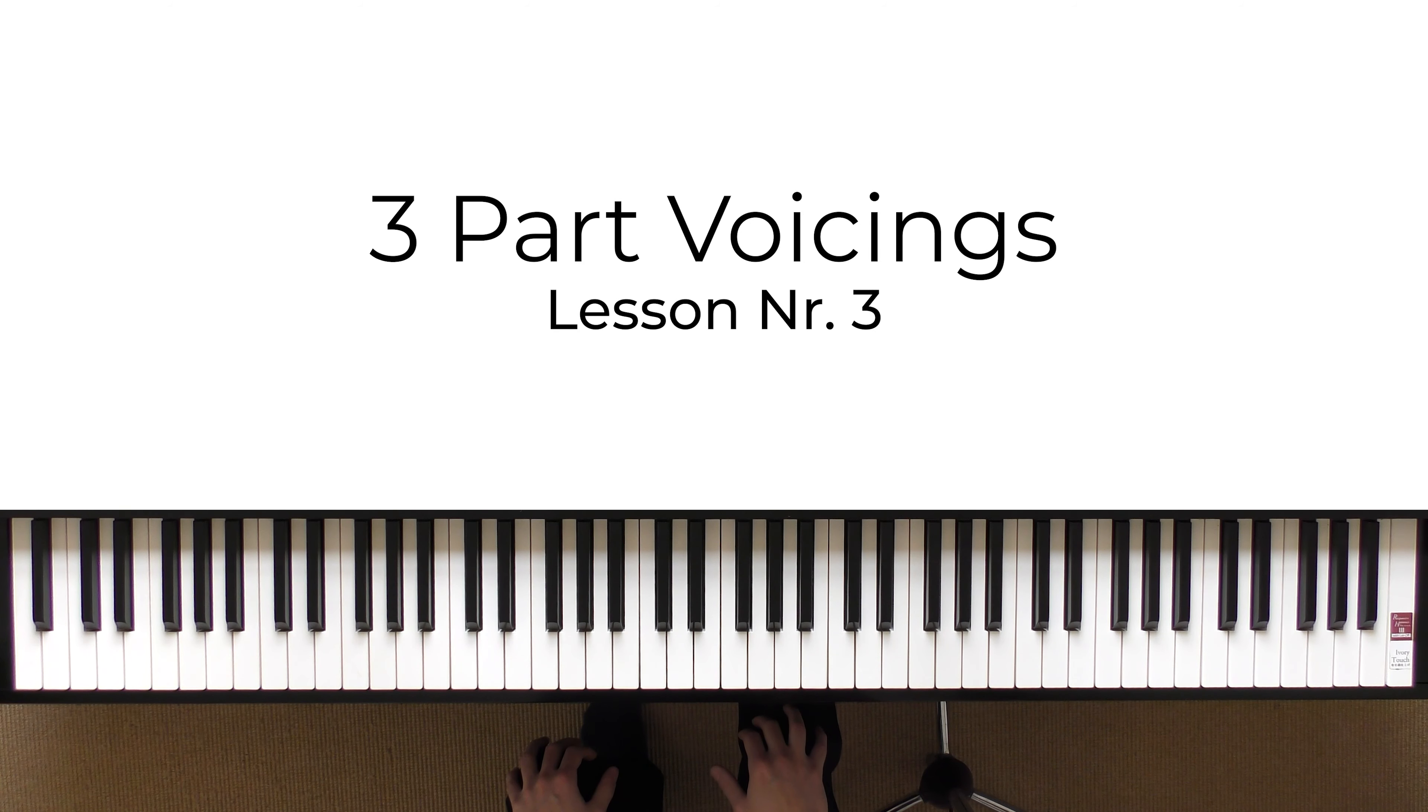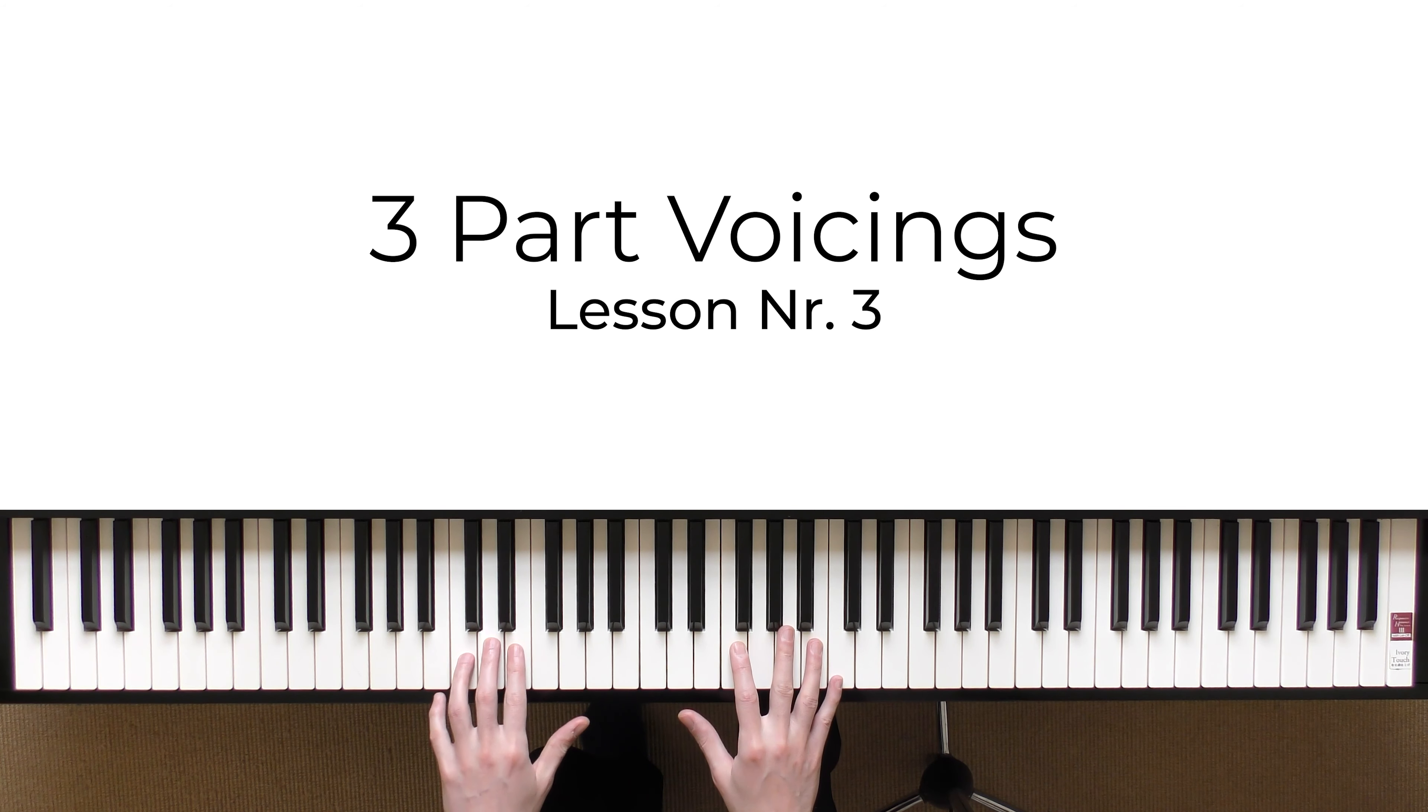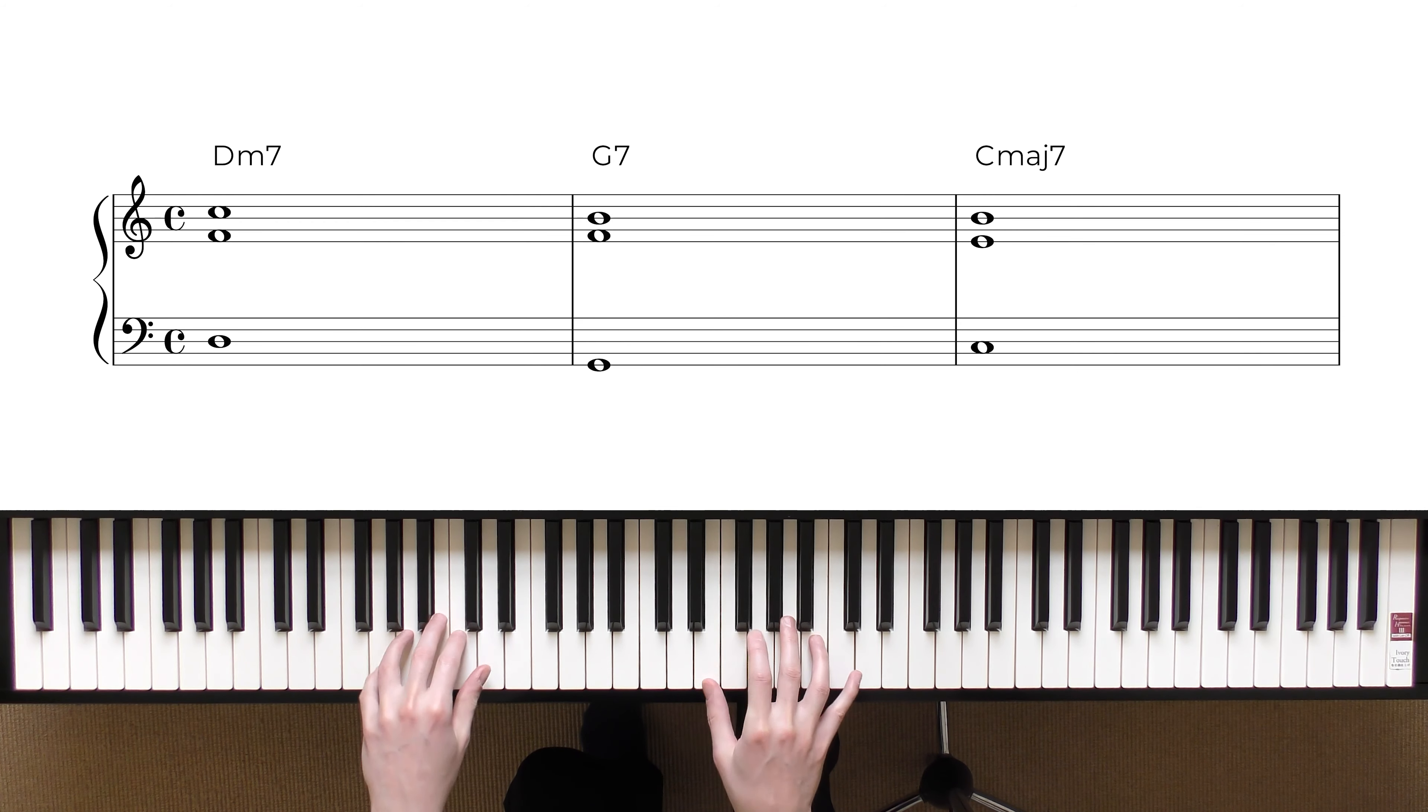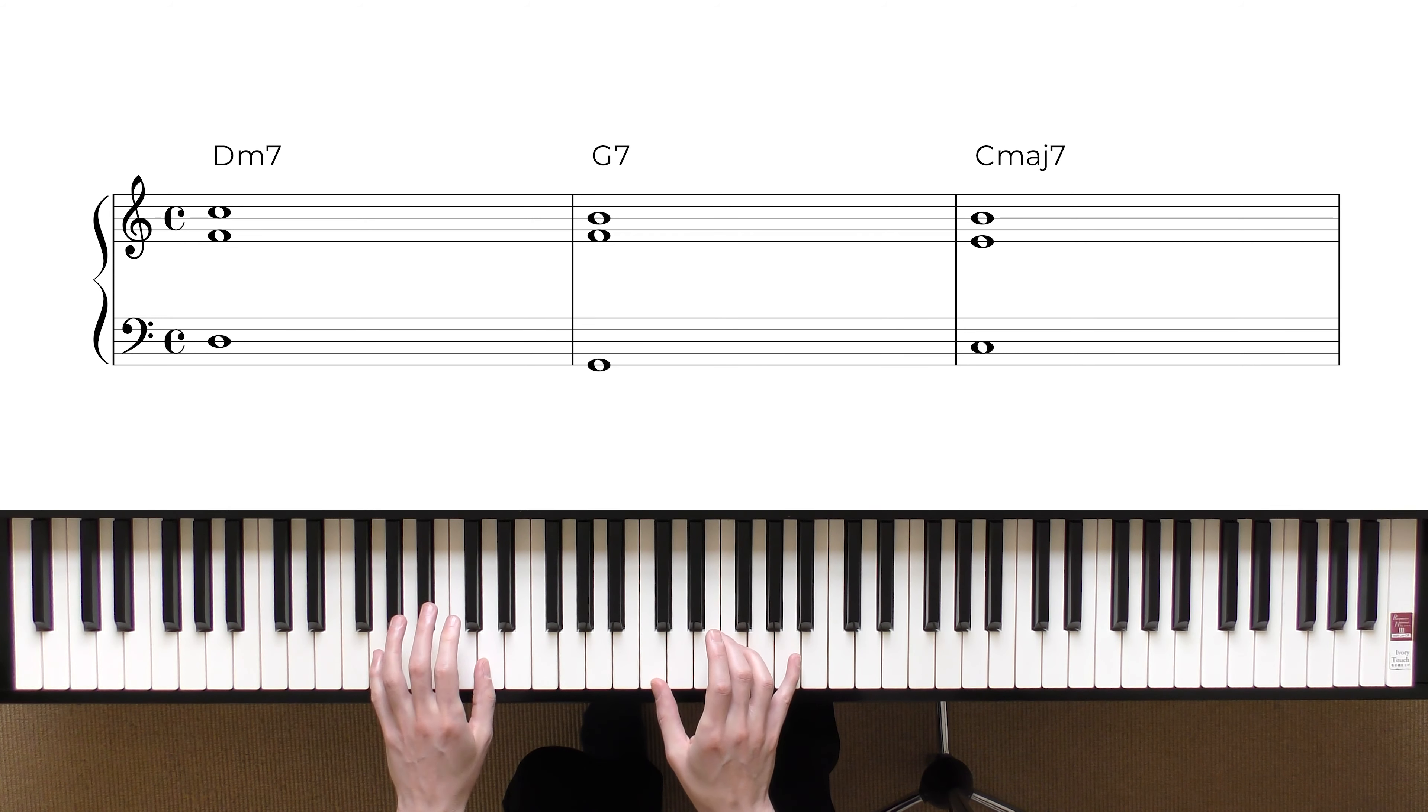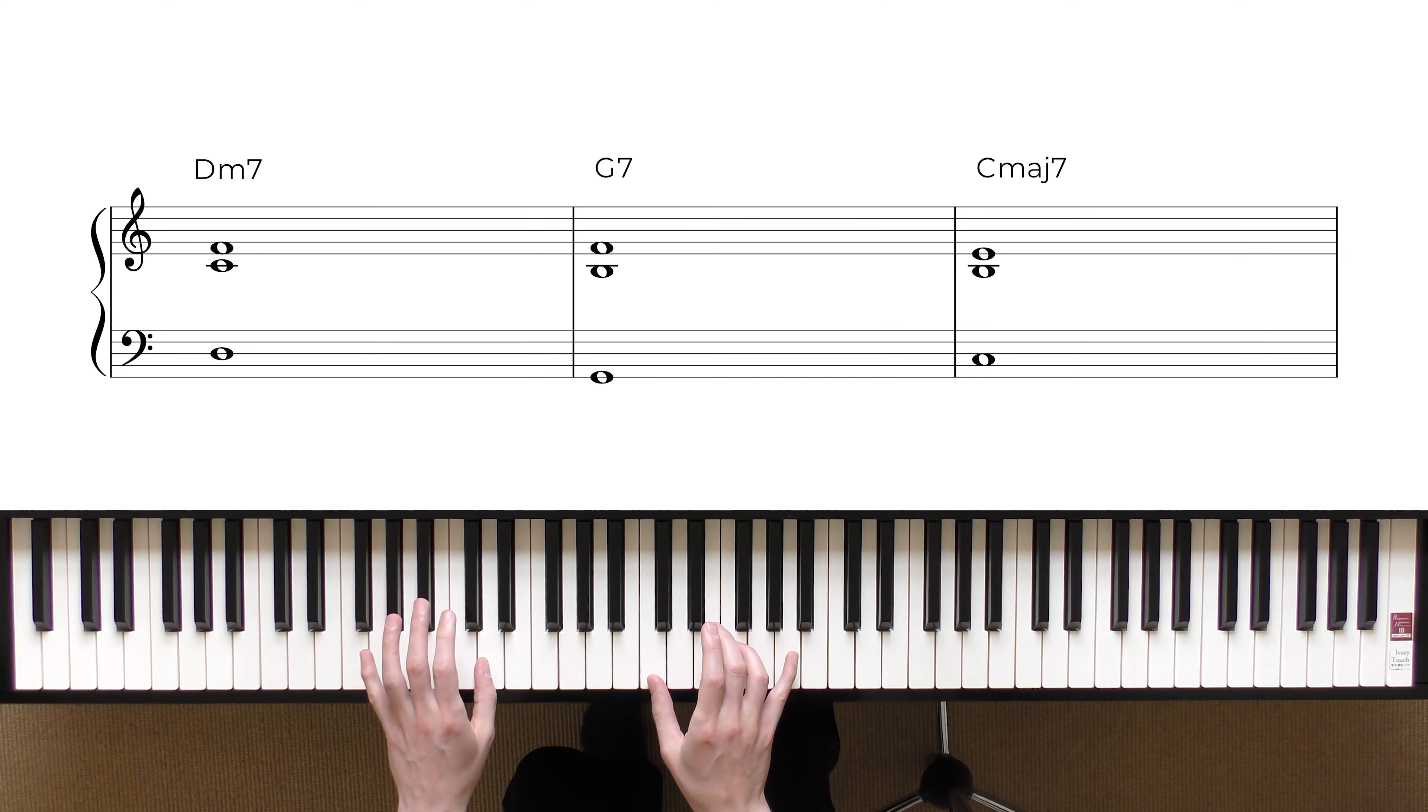So, last few lessons, we saw a very simple voicing, and this is 2-5-1 using only the root, the 3rd and the 7th. And then we saw the alternative arrangement, which is with the 7th below the 3rd.